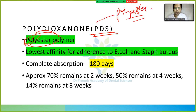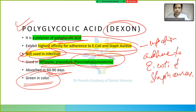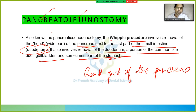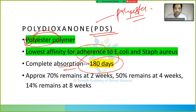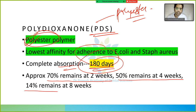PDS, or polydioxanone, is a polyester polymer. It has the lowest affinity for adherence to E. coli and Staph aureus. Complete absorption takes 180 days — the longest of all sutures. Regarding tensile strength: approximately 70 percent remains at 2 weeks, 50 percent at 4 weeks, and 40 percent at 8 weeks.